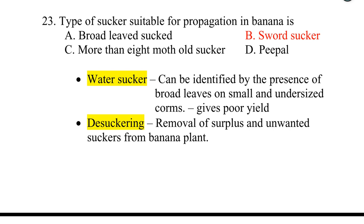Water suckers are not used for propagation and can be identified by their broad leaves on small and undersized corms. When water suckers are used for propagation they give poor yield. Suckering — removal of surplus and unwanted suckers from the banana plant — is done to direct nutrients to the mother plant.